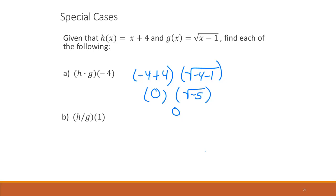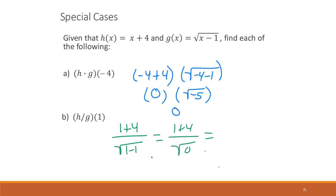The next case: h evaluated gives (1 + 4) over the square root of (1 − 1), which is 5 over the square root of 0. The square root of 0 is 0, so this is 5 over 0 — undefined. To summarize: if you get 0 as a complete answer, the answer is 0. If you get 0 in the denominator, the answer is undefined.